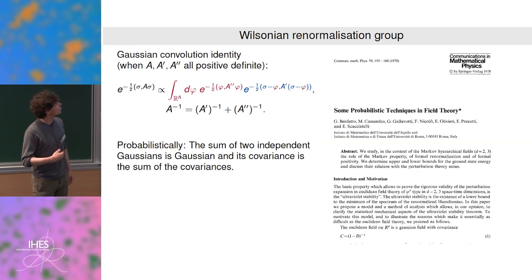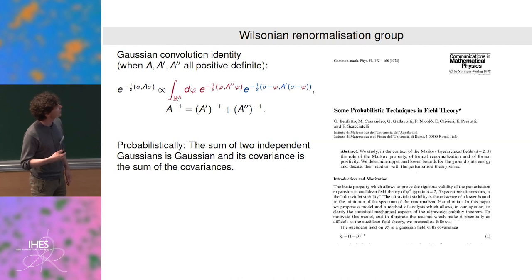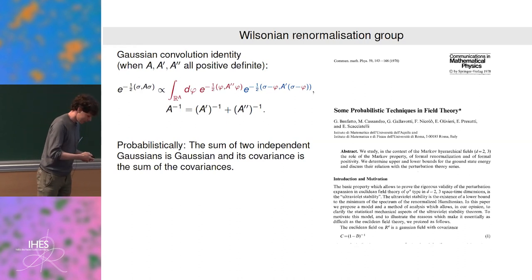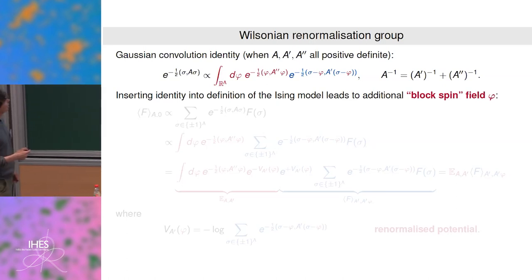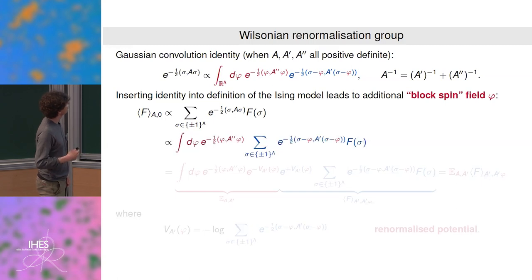Let me mention one paper from 1987 from the initiators of the Italian school of the renormalization group, who basically emphasize these probabilistic aspects. This identity appears in the partition function of the Ising model — we insert it and what it leads to is an additional variable phi, which we may think of as a block spin field. Starting with the definition of the Ising model with magnetic field set to zero, we insert this identity and get a different formula for the partition function with the additional phi variable being integrated over.